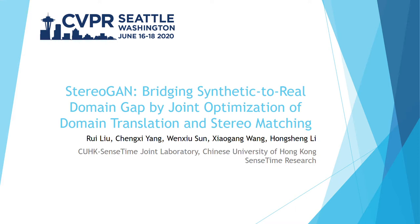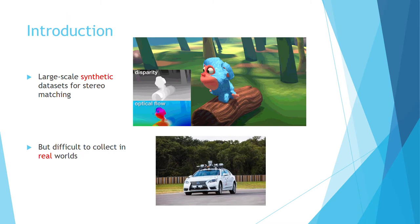This is a one-minute video for online CVPR 2020. The title of this paper is StereoGAN: Bridging Synthetic to Real Domain Gap by Joint Optimization of Domain Translation and Stereo Matching.